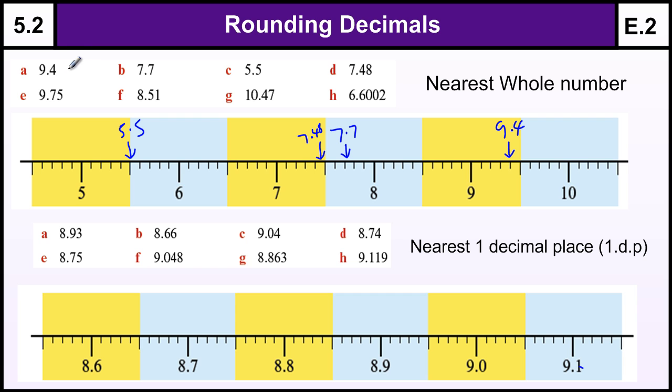So, 9.4 to the nearest whole number is going to be 9. I'm using the squiggly equals there because it's not equal to 9 but it's approximately equal to 9. And to the nearest whole number 7.7 is going to be 8, and 5.5 that's halfway so the convention is we round it up to 6. And 7.48, 7.4 is below 7.5, the 8 doesn't really matter that much because it just puts it somewhere between 7.4 and 7.5 so that is going to be 7.